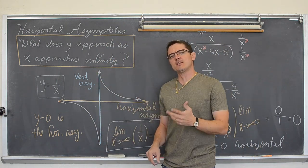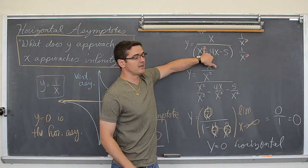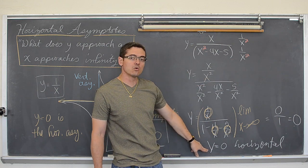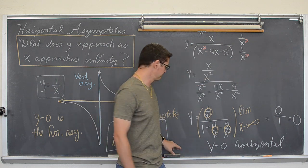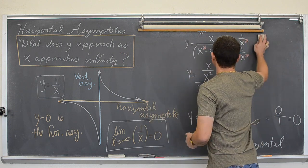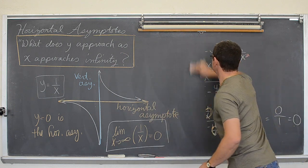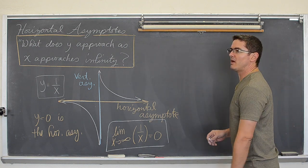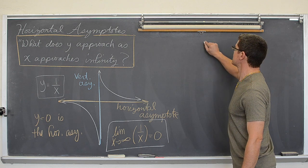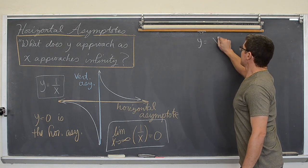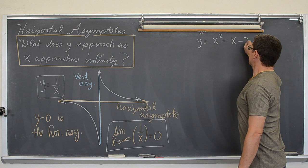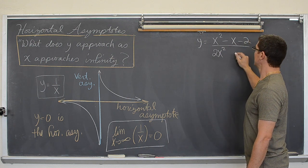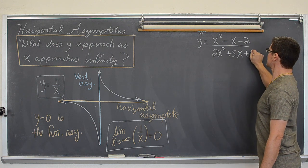Just remember: if the bottom degree is larger than the top degree, like the previous example, you always get a horizontal asymptote at y equals zero. Now let's take a look at another example.